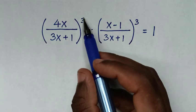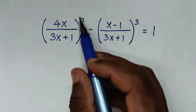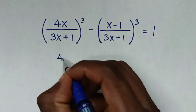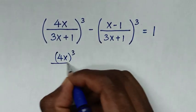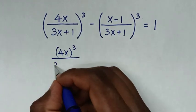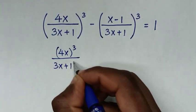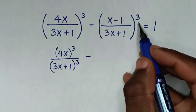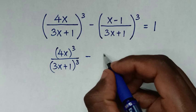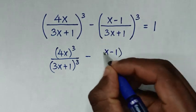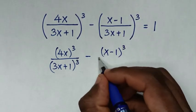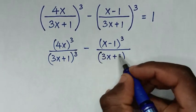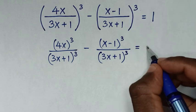In the first step, we'll take the powers of 3 inside the brackets. So it will be (4x)³ over (3x+1)³, then minus — taking the power of 3 inside the bracket as well — (x-1)³ over (3x+1)³, and this equals 1.